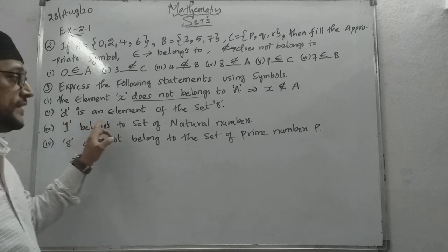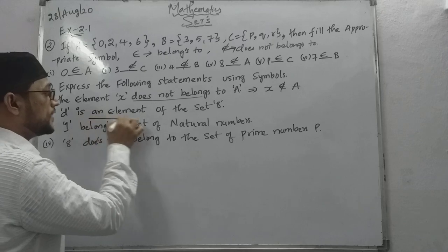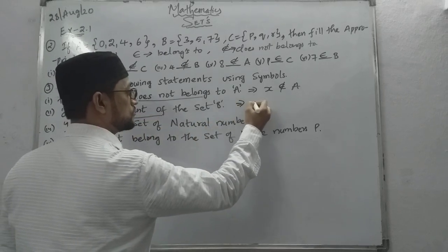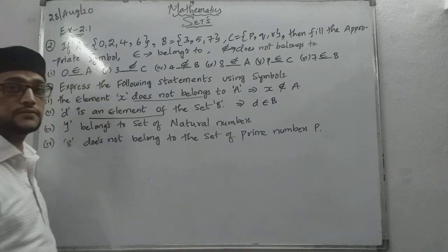Now D is an element of set B. D is an element of set B. Is an element means belongs to, D is an element of set B.